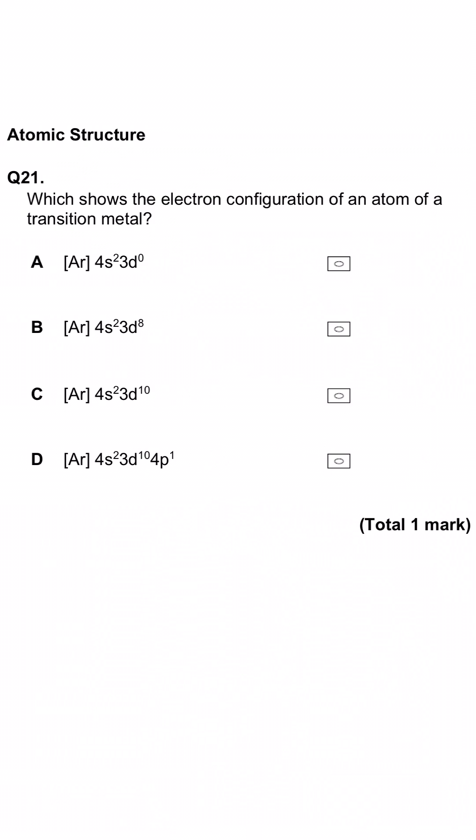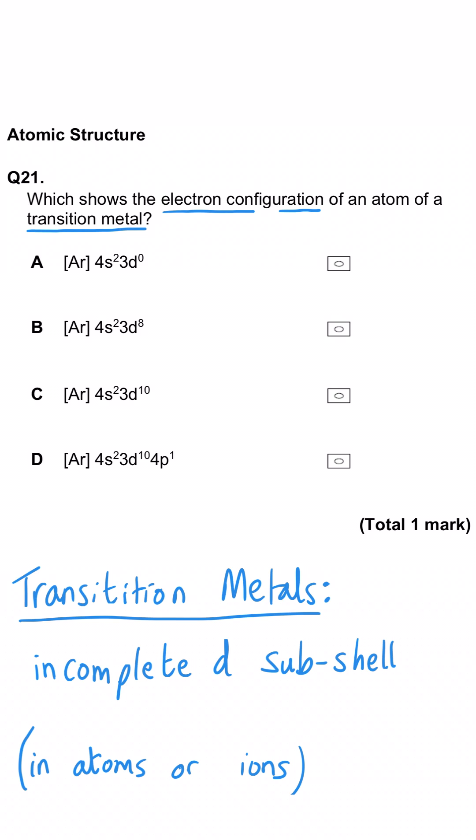This question is asking us about the electron configuration of a transition metal. You need to know that transition metals have an incomplete D subshell, so that's what we're on the lookout for here. So A has got an empty D subshell, so that's not a transition metal. B has got eight electrons in its D subshell. Now the D subshell can hold ten, so this is incomplete. There will be five orbitals in the D subshell, three of them will have two electrons in each, but the last two will have just one electron in each of the orbitals, so this is incomplete.